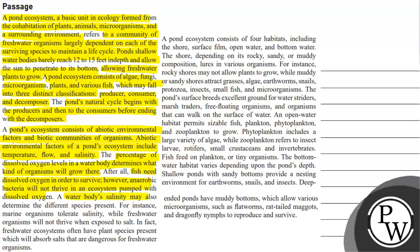A water body's salinity may determine the different species present. For instance, marine organisms tolerate salinity while freshwater organisms will not thrive when exposed to salt. In fact, freshwater ecosystems often have plant species present which will absorb salts that are dangerous for freshwater organisms.